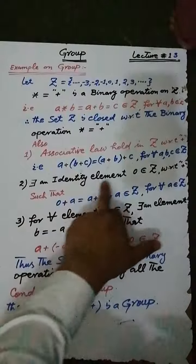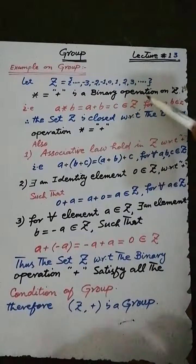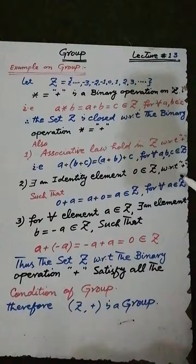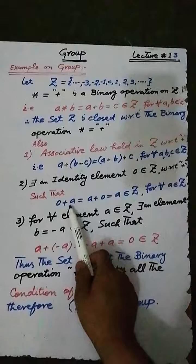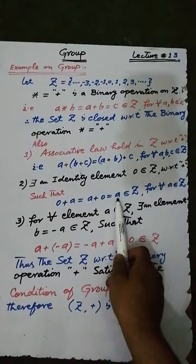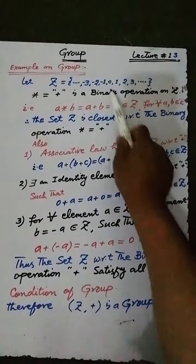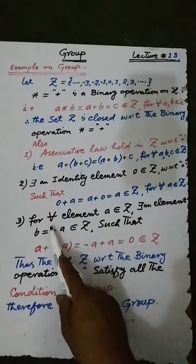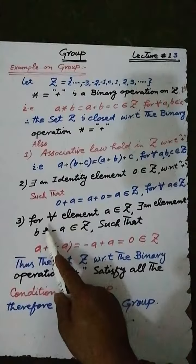To check the third condition: there exists an identity element 0 belonging to the set z of all integers, with respect to the binary operation addition, such that 0 plus a is equal to a plus 0 is equal to a, where a is any element of the set z of all integers.